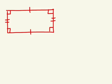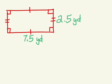Now, let's figure out what our dimensions are for this rectangle. Let's do some decimal multiplication. Let's say seven and a half yards for the length, and the width is two and a half yards.